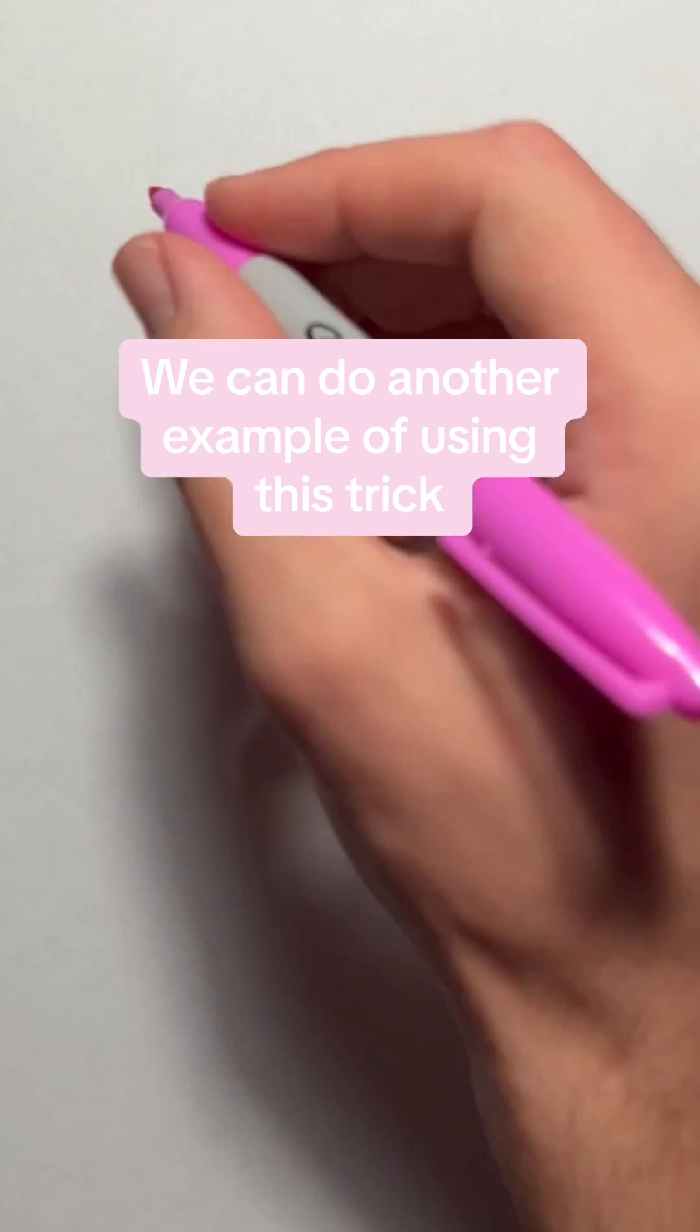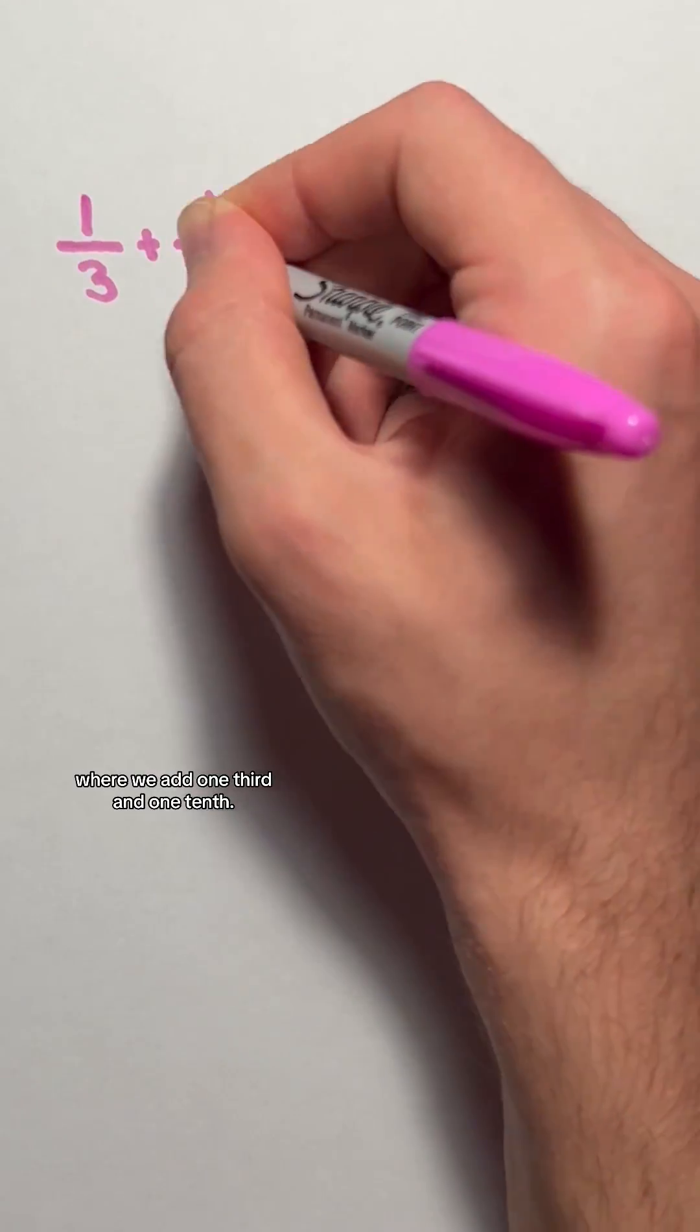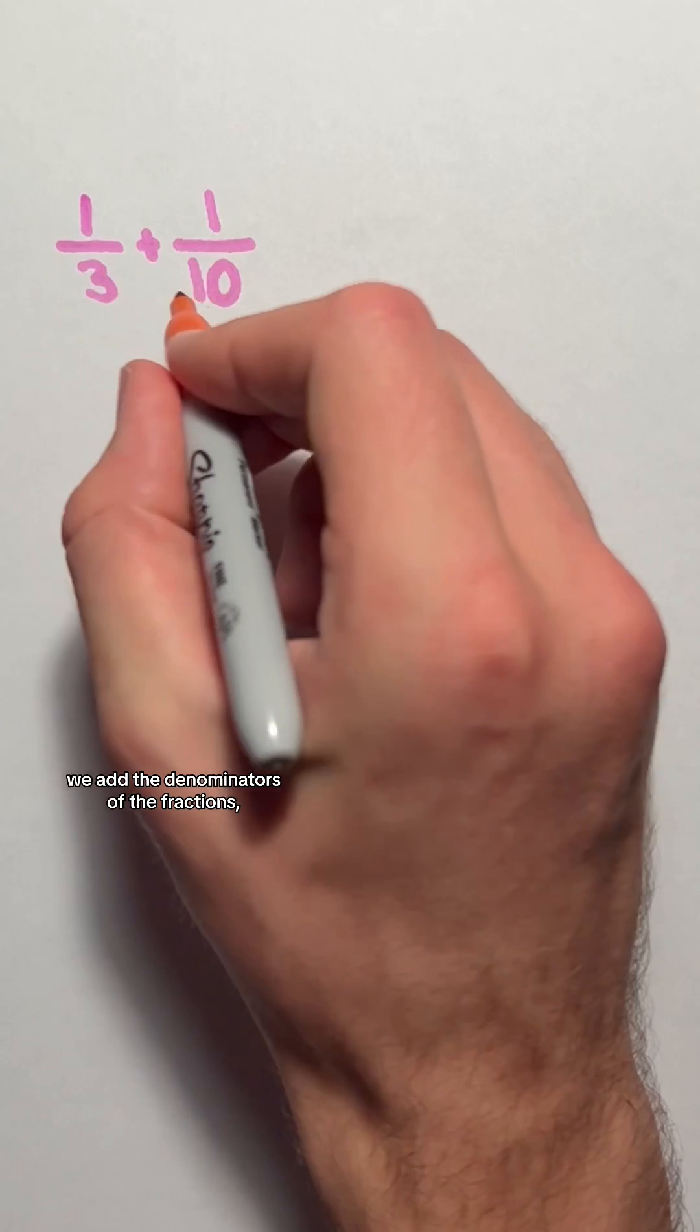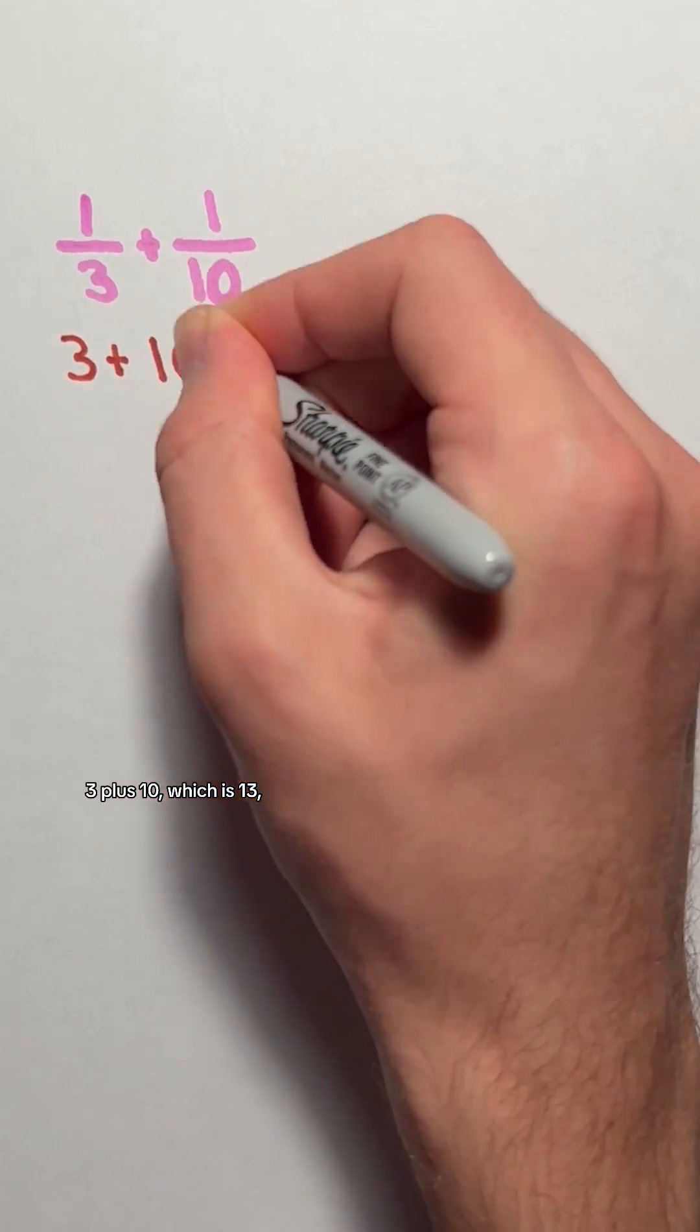We can do another example using this trick where we add 1/3 and 1/10. To get the numerator of the sum, we add the denominators of the fractions, 3 plus 10, which is 13.